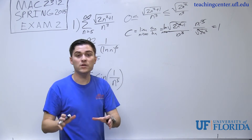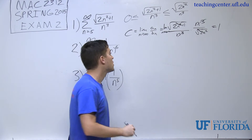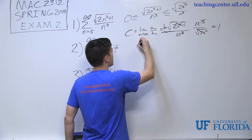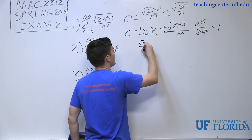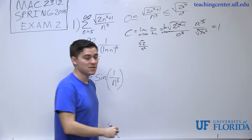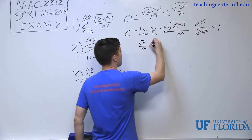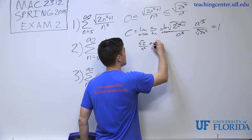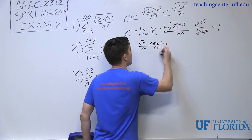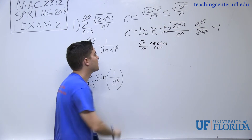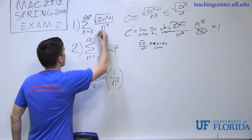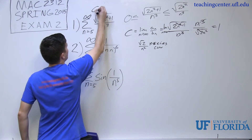Since the limit equals 1, which is between 0 and ∞, both series either converge or diverge. I know √(2n²)/n³ simplifies to √2/n², which converges by the p-series test. Therefore, since that series converges, the original series also converges. Series one is convergent.